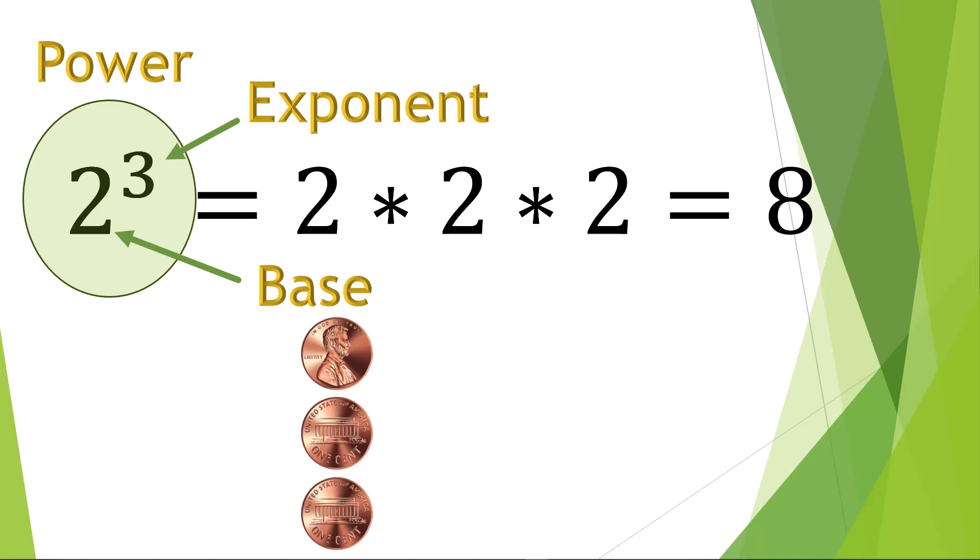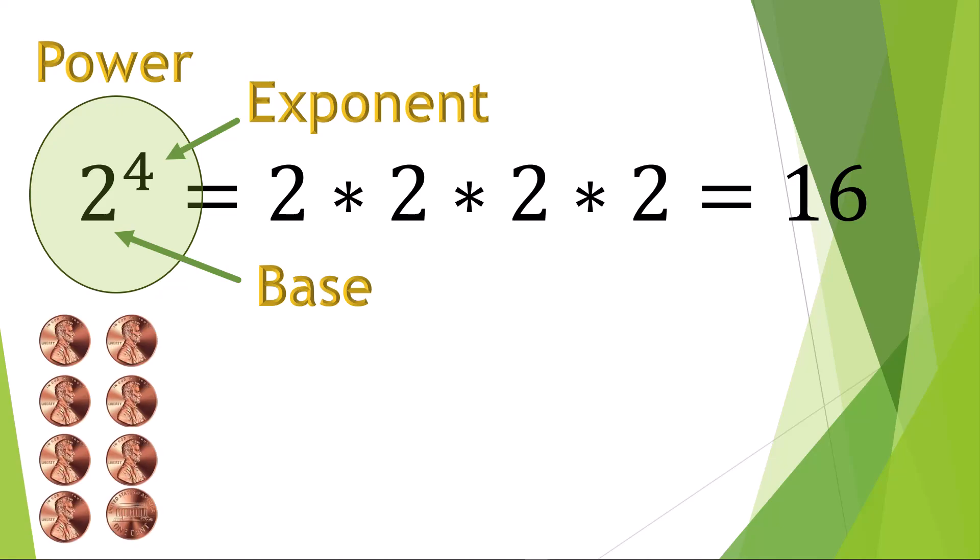If you wanted to toss 4 pennies in the air, there would be 2 to the 4th power, or 16 combinations. All four heads, heads-heads-heads-tails, heads-heads-tails-heads. Well, you get the idea.